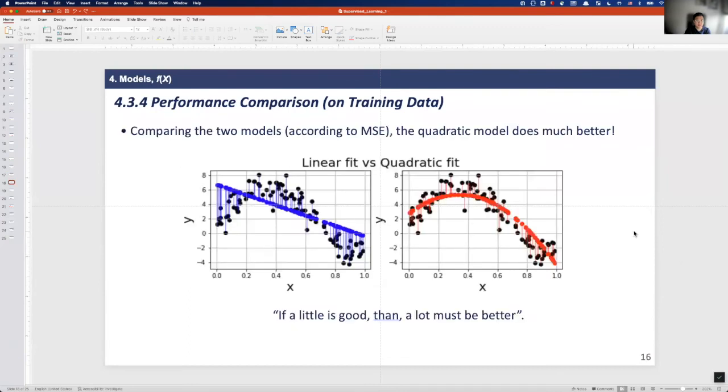So it seems like if we consider more terms and make more complex models, we have a better chance to make a good prediction. So why not try more complex models by increasing the polynomial degree?